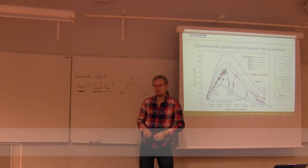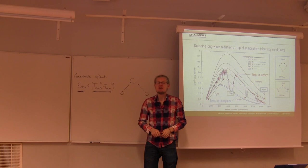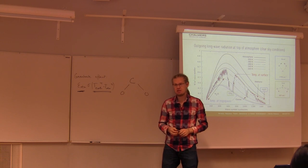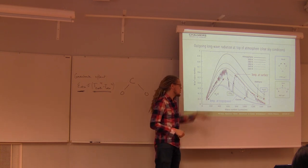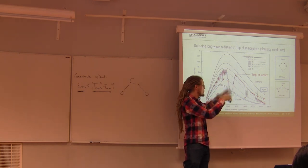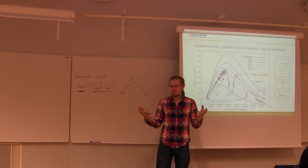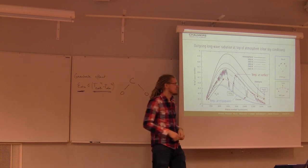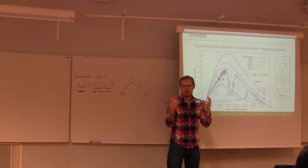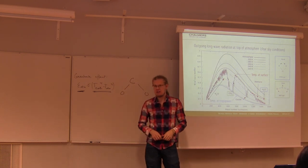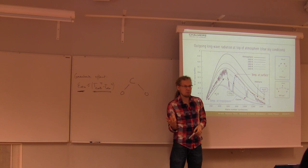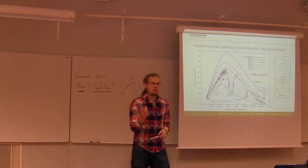Clouds are also very good at absorbing infrared radiation because they contain water vapor. On average in the atmosphere, water vapor concentration is not very high, but in clouds you get saturation. So if there were clouds in the diagram, much more radiation would be absorbed by the water vapor in those clouds. We'll talk more about that when we come to climate feedbacks.